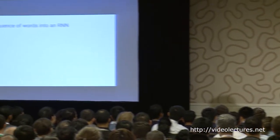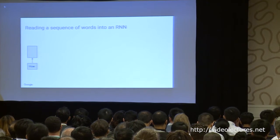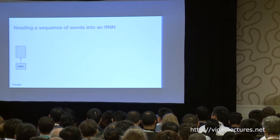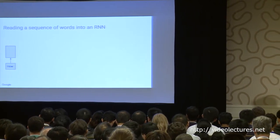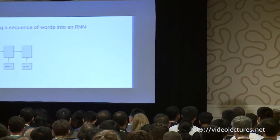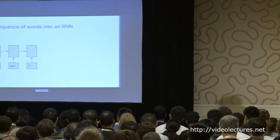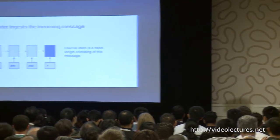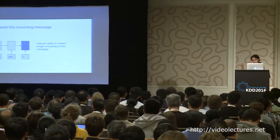A recurrent neural network is like a feedforward neural network, except that it has an internal state that can persist across time as it reads a sequence of inputs. In our case, the sequence of inputs is an email — a sequence of words. If the email was something like 'how are you,' we feed one token at a time into the recurrent neural network. At each step it updates its internal hidden state, and by the time it's seen the last token, that internal state is a fixed-dimensional vector representation of the message — an encoding. This is exactly what our encoder is.